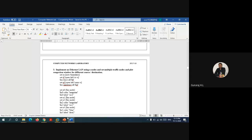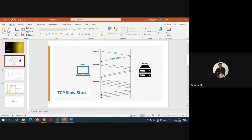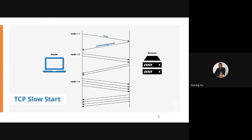TCP mainly deals with three phases of TCP congestion. The congestion window — or simply the window — is the size or capacity of the receiver and sender. TCP congestion window is the TCP window size. In the case of TCP protocol, if you send data, you get an acknowledgement for each and every data sent.